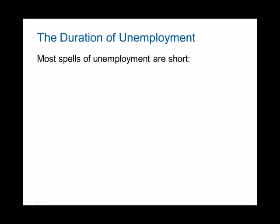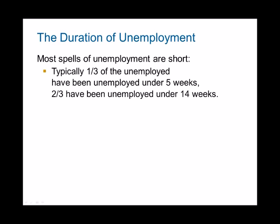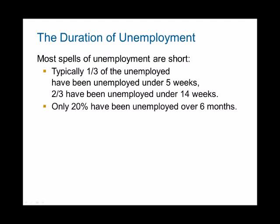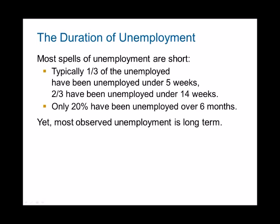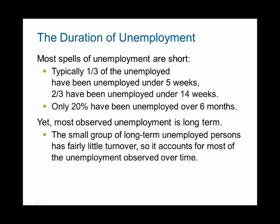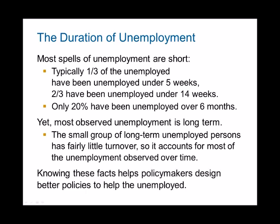Most unemployment spells are short. Typically, one-third of unemployed people find work within five weeks, and two-thirds within 14 weeks — about three and a half months. About 20% will be unemployed for over six months. Yet most observed unemployment is long-run, because this group of people has very little turnover and we see them unemployed for most periods. Identifying who is long-term unemployed and why can help policymakers design effective programs.